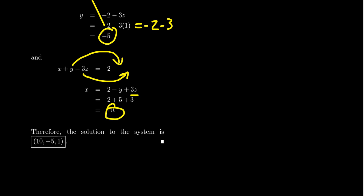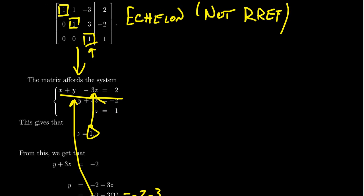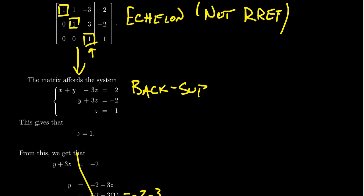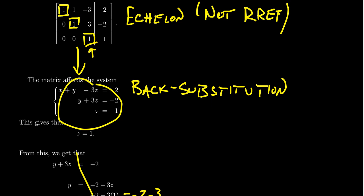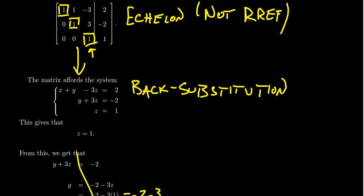By having a matrix in echelon form, we can very quickly solve the linear system using a method called back substitution — essentially the second half of the substitution method. Once you start finding values, you plug them back in to figure out the other unknowns. This strategy of back substitution will solve any system of equations so long as the corresponding augmented matrix is in echelon form, regardless of how many variables are involved.